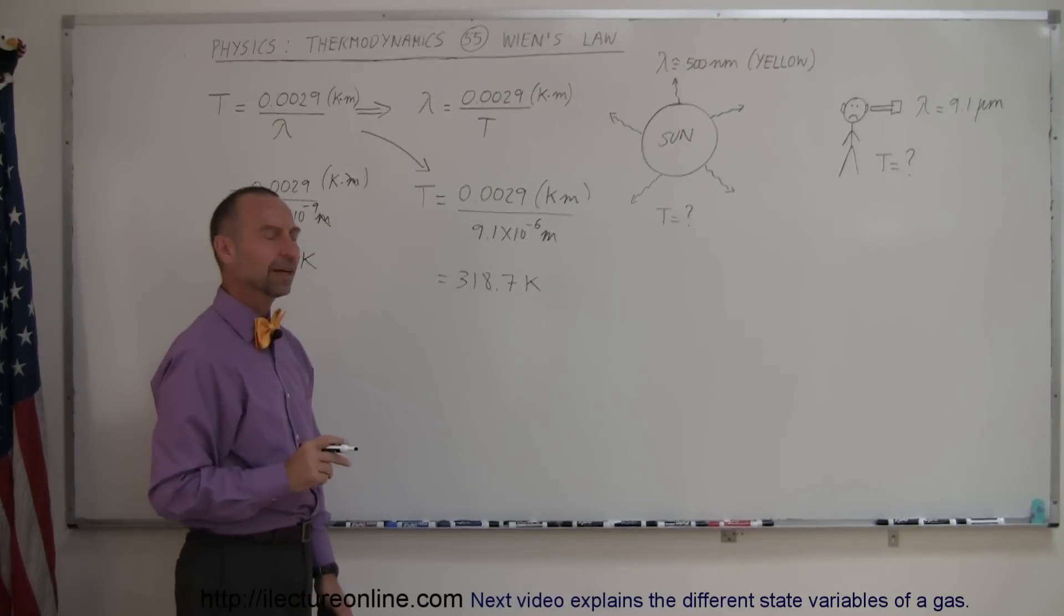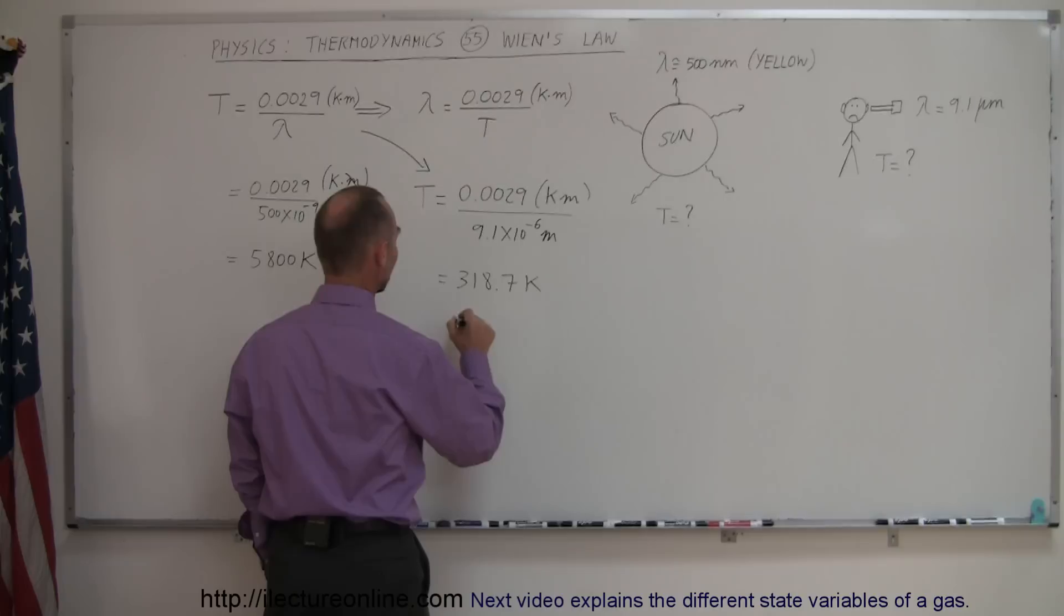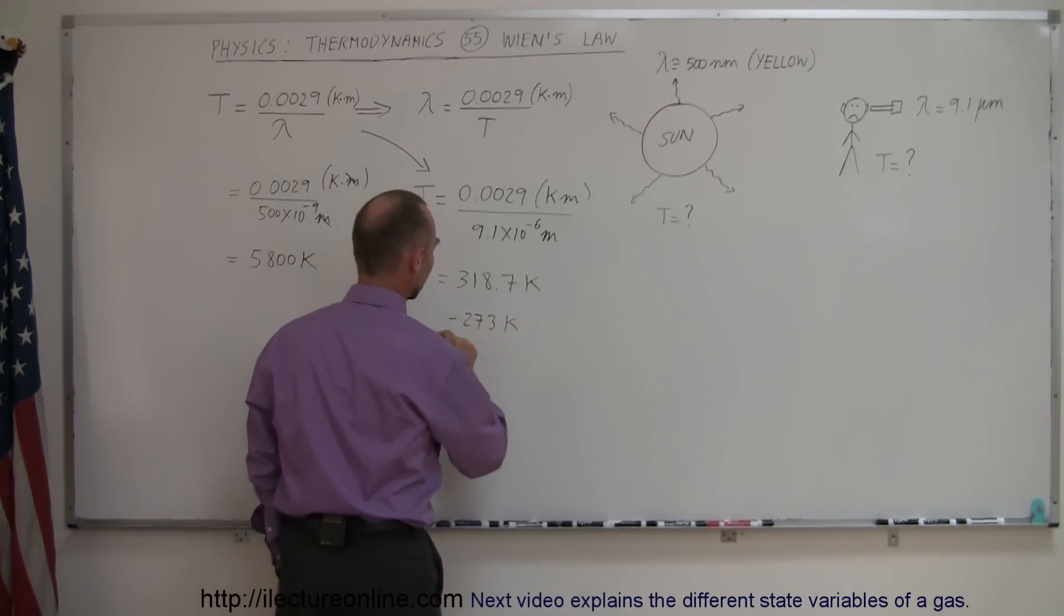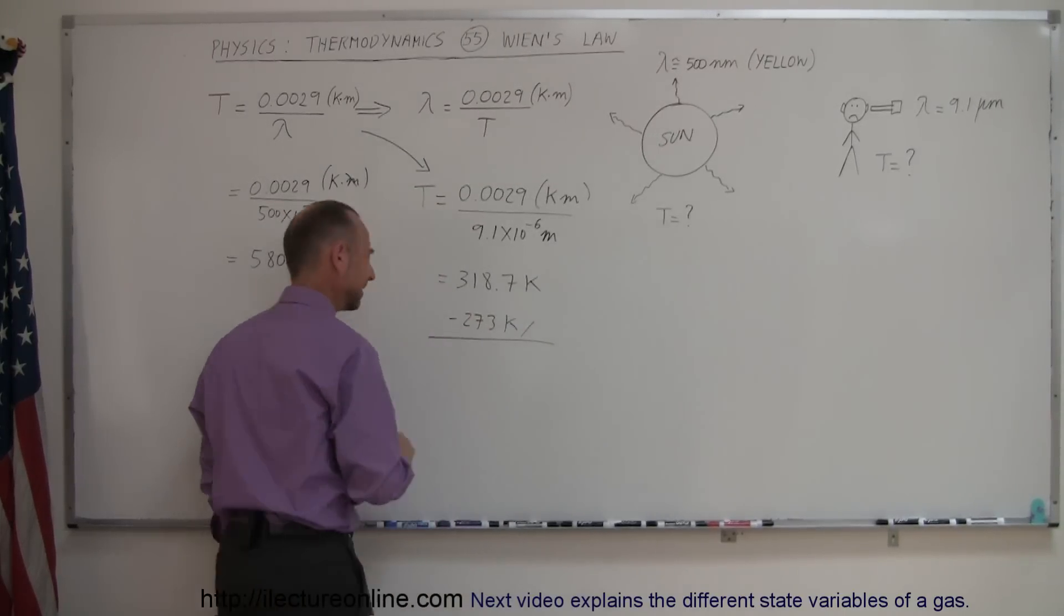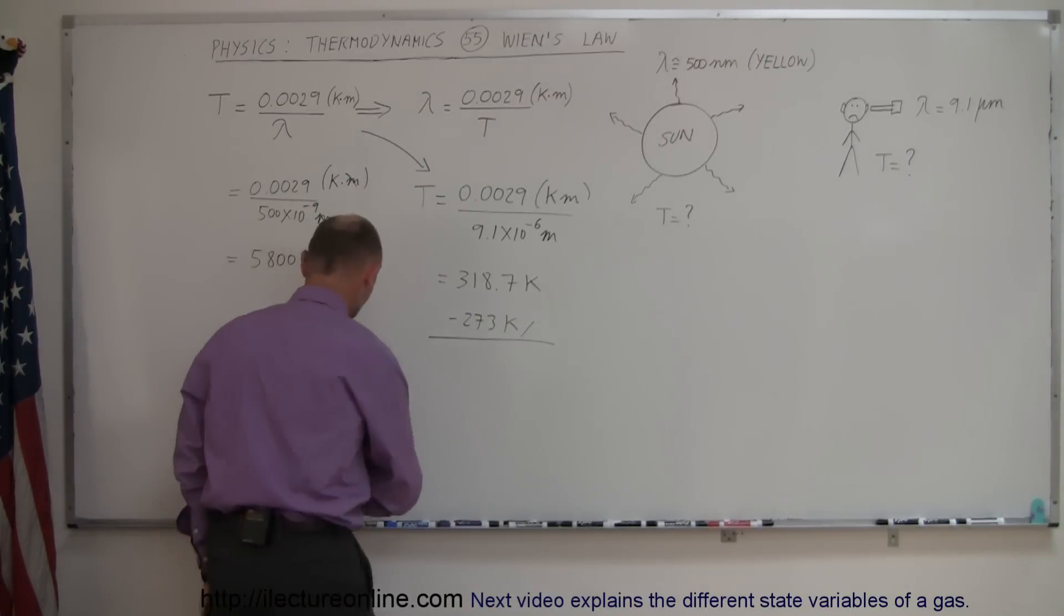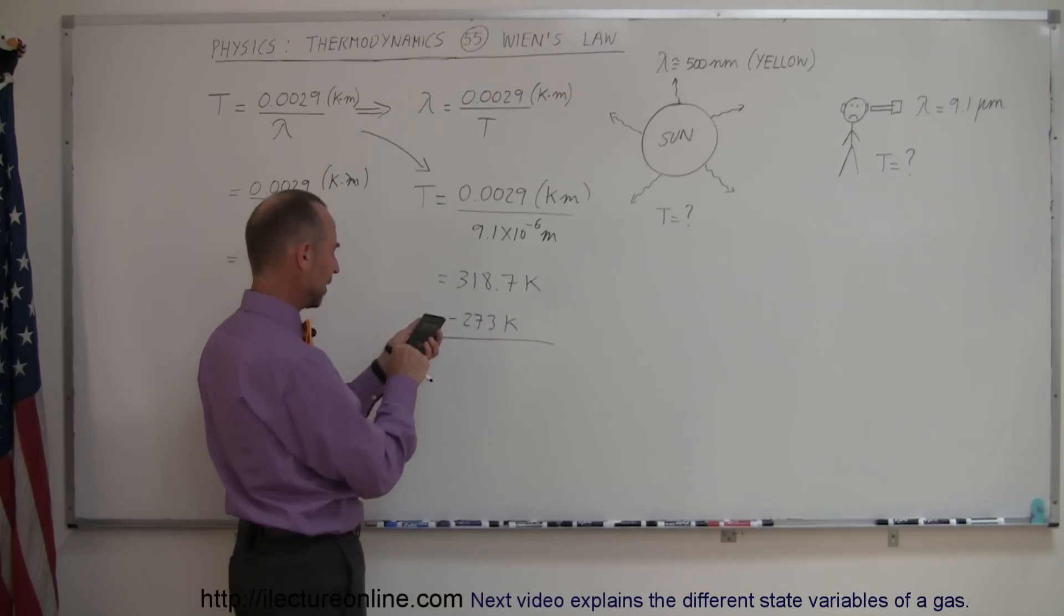How much is that in Fahrenheit? Well first we're going to convert that to centigrade degrees. So just take off 273 which converts to centigrade degrees. So doctor says you have a fever 45.7 degrees centigrade which by the way is a really high temperature.